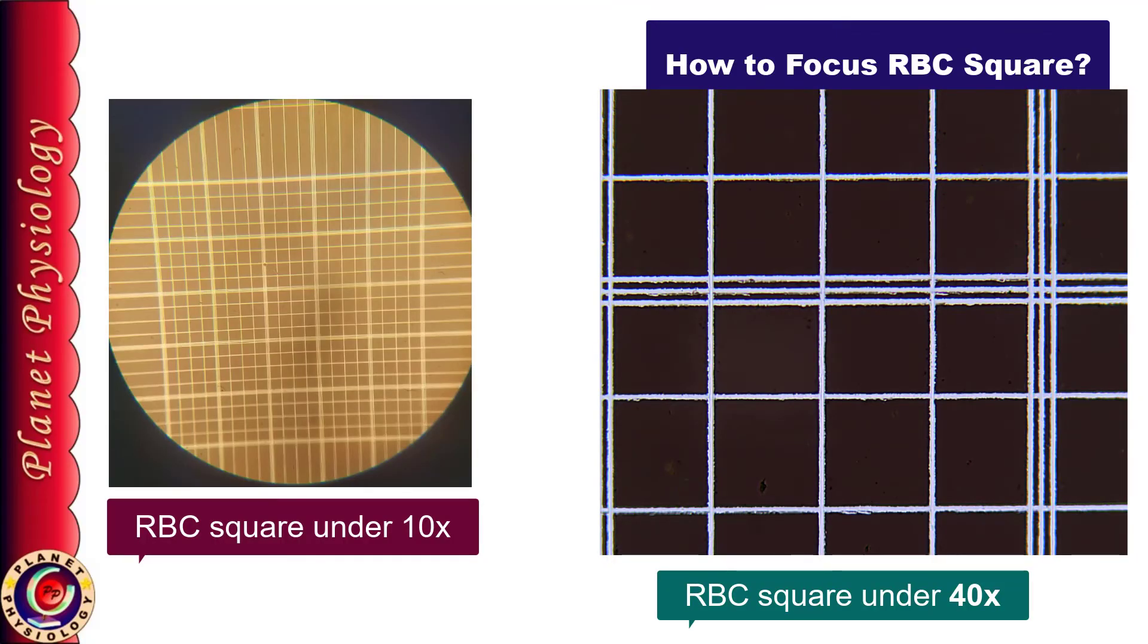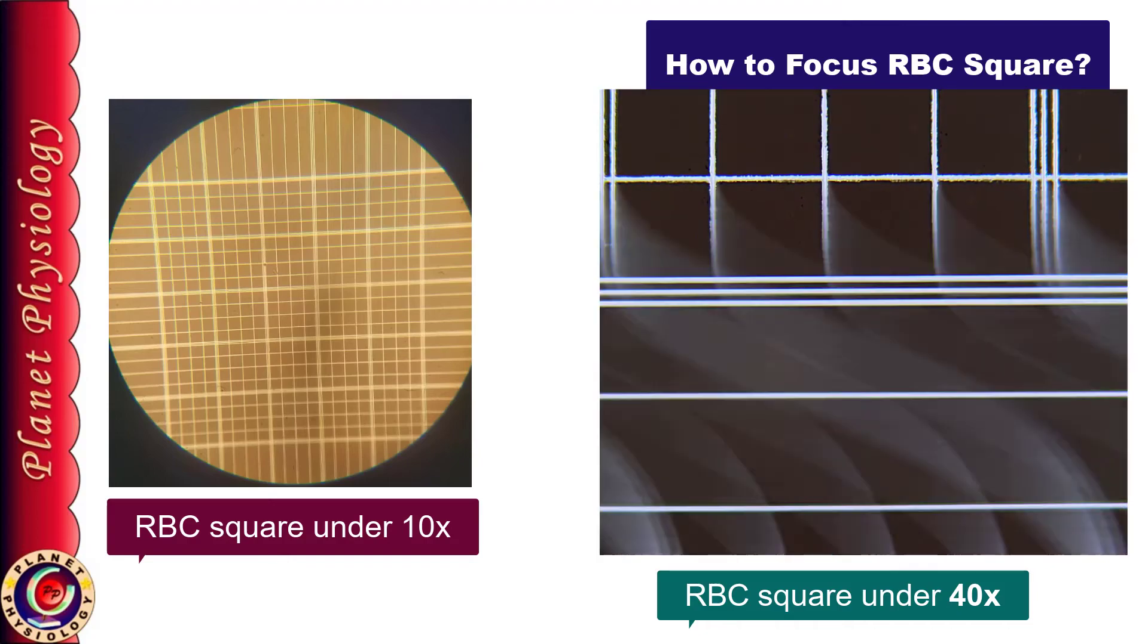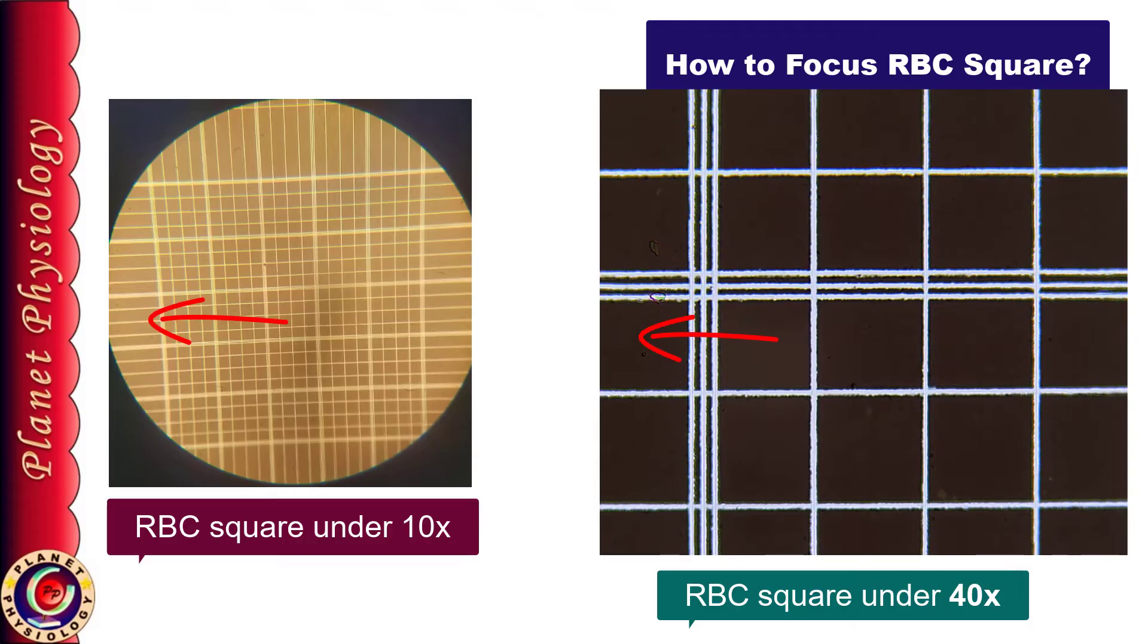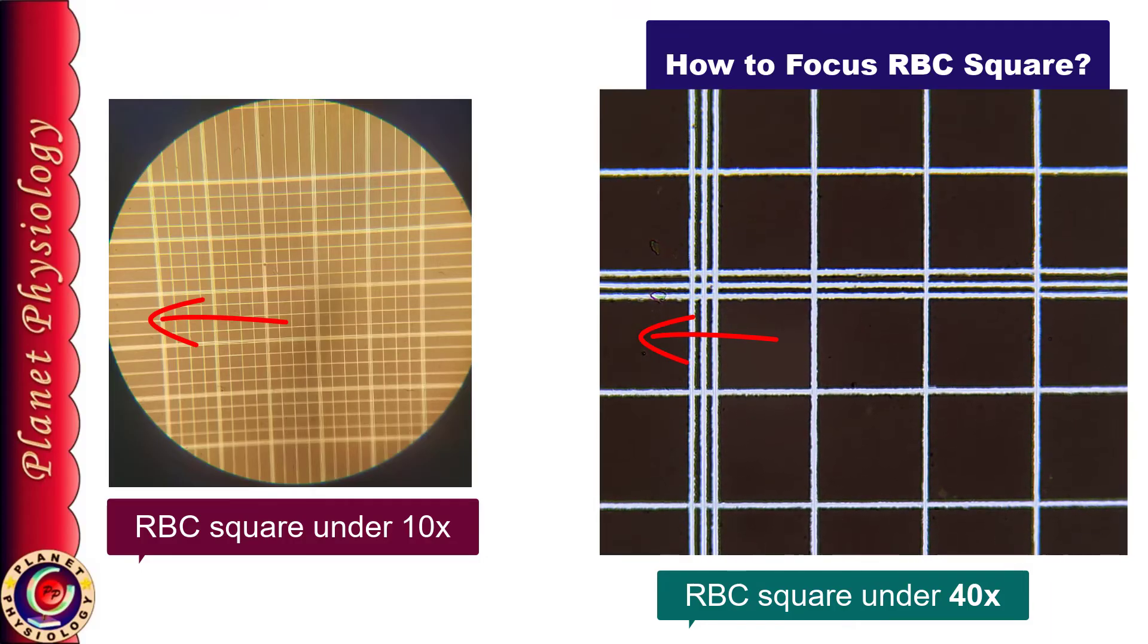So I don't know in which part I am. So I am moving it sideways. I am moving towards left side. Here I can see only horizontal lines on one side of triple lines and there are squares on the other side. That means I have reached to the boundary of the RBC square.